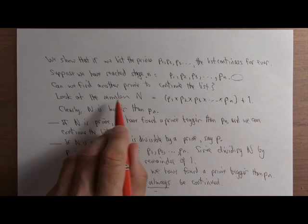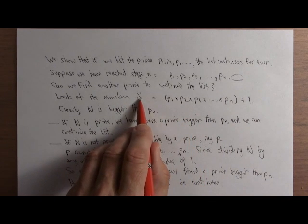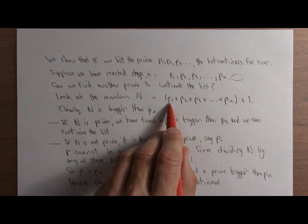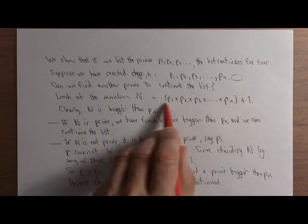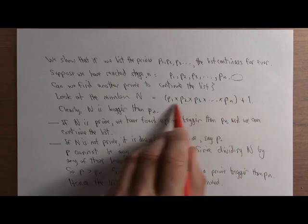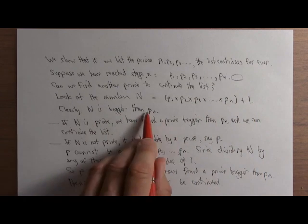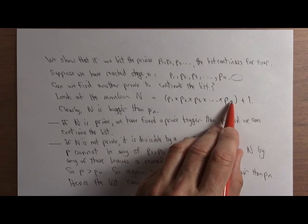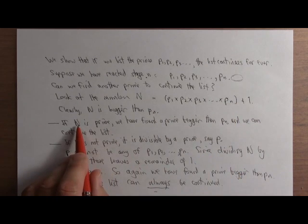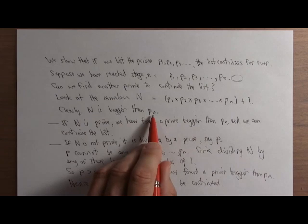How do we do that? Well, there's a clever idea. We look at this number big N, which means you multiply the first little n primes. That's a little n there. You multiply them together and you add 1. N is certainly bigger than the last one in that sequence. So if big N is prime, then it's a prime bigger than pn.